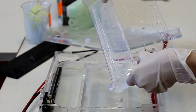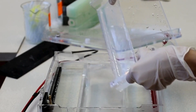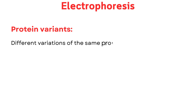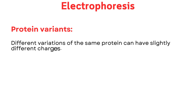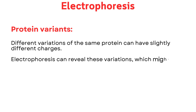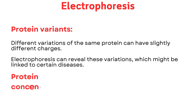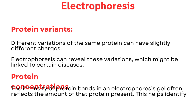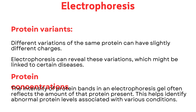This separation allows scientists to assess protein variants — different variations of the same protein can have slightly different charges. Electrophoresis can reveal these variations, which might be linked to certain diseases. It also reveals protein concentrations, as the intensity of protein bands in an electrophoresis gel often reflects the amount of that protein present, helping identify abnormal protein levels associated with various conditions.